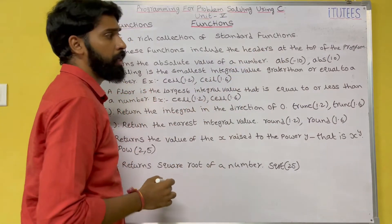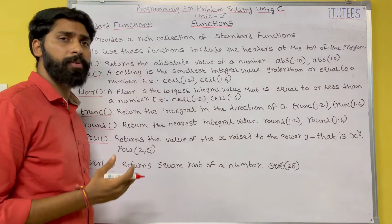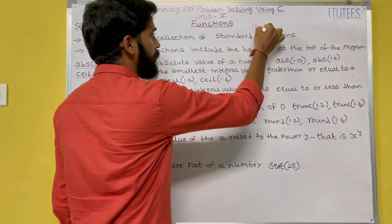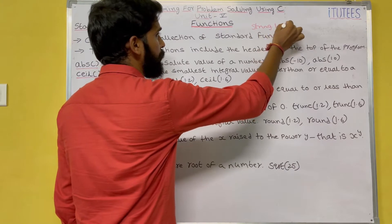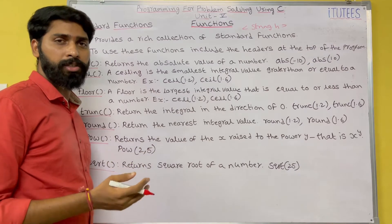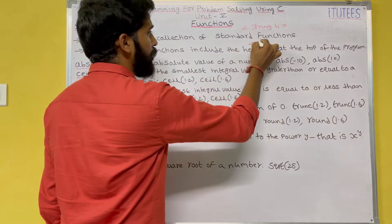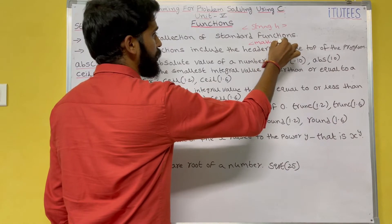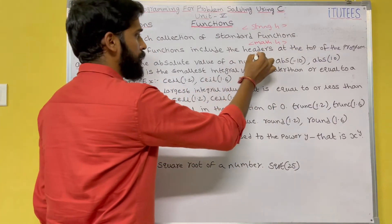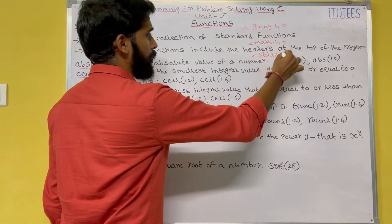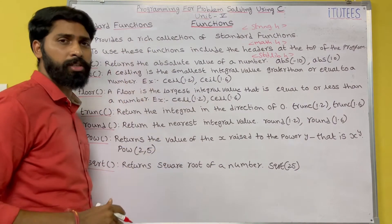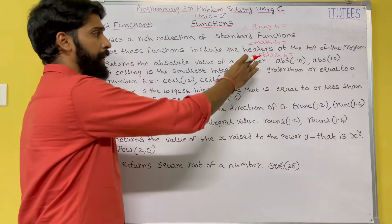To use these functions, we are going to include the headers at the top of the program. For example, if you want to use any string handler functions, you include string.h with hash include. If you use any mathematical functions, you include math.h. If you are using any standard library functions, you include stdlib.h. So to use these functions we include the header files at the top of the program.